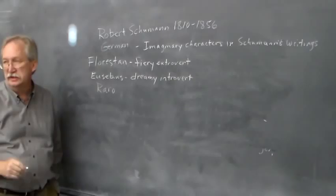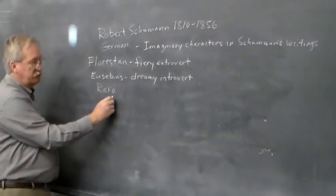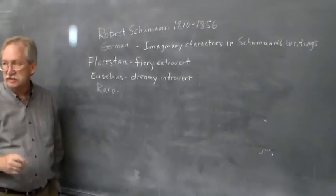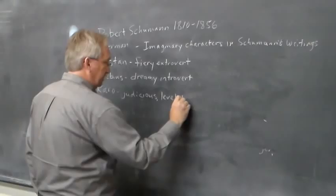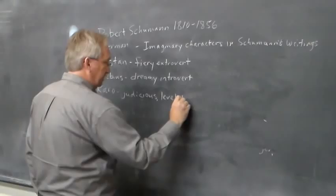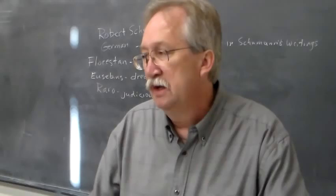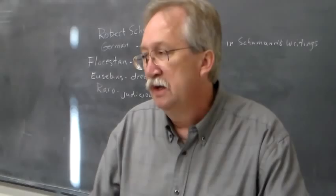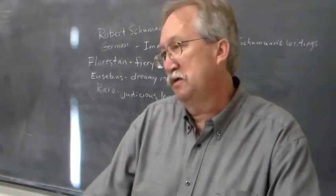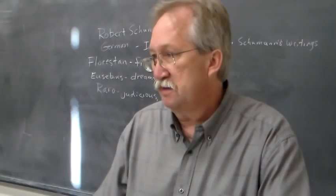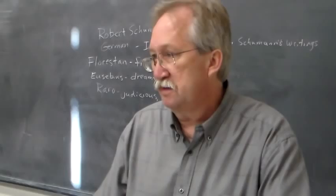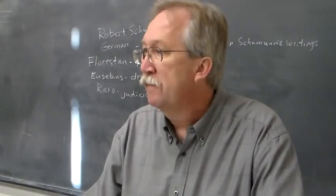He had a third character he sometimes used: the androgynous character Raro, which he derived from the last two letters of Clara's name — his wife — and the first two letters of his own name. Raro was the judicious, level-headed character. These three characters represented a band of musicians who upheld the highest standards for artistic expression. This group he called the Davidsbündler, meaning the League of David.